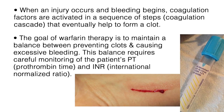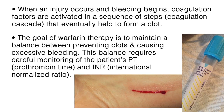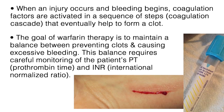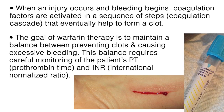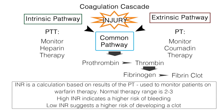The goal of warfarin therapy is to maintain a balance between preventing clots and causing excessive bleeding. This balance requires careful monitoring of the patient's PT, or prothrombin time, and INR, international normalized ratio. The PT measures the number of seconds it takes blood plasma to clot. It is usually performed with a partial thromboplastin time, or PTT, and together they assess the amount and function of coagulation factors. The INR is a calculation based on results of the PT and is used to monitor patients on warfarin therapy.